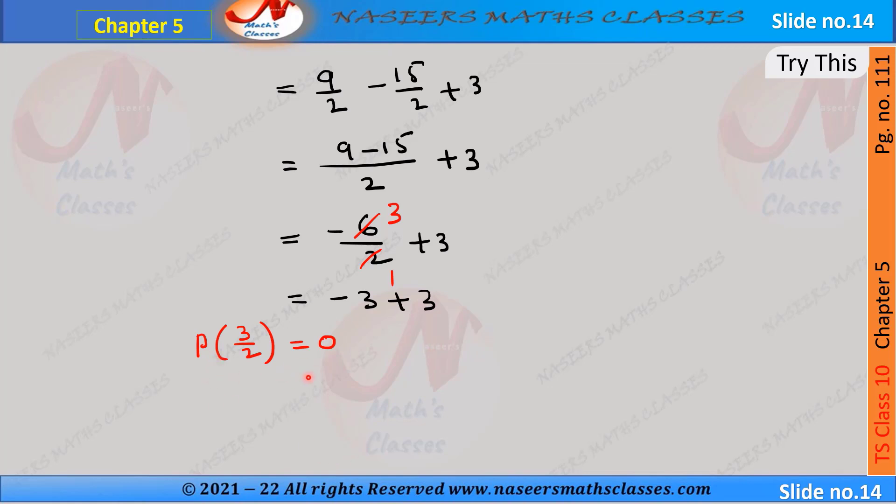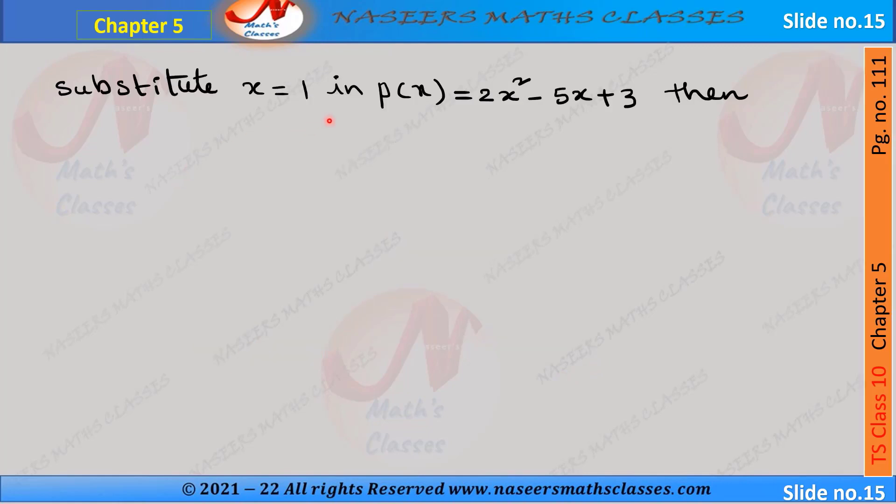So -3 + 3 = 0. Therefore we can write p(3/2) = 0, so we can say that 3/2 is the zero of p(x). Next we substitute x = 1 in p(x).